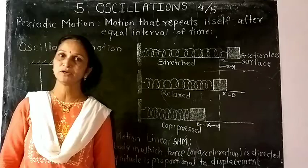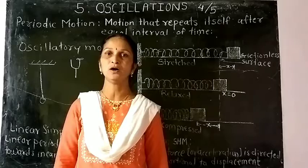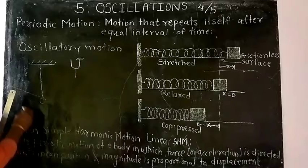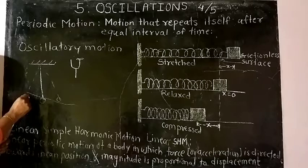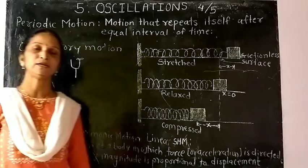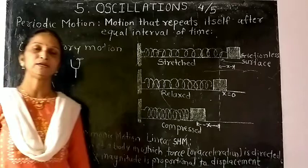The body performing oscillatory or vibratory motion is known as an oscillator or vibrator. One complete set of movements — where the bob starts from one extreme position, moves towards the mean position, moves to the other extremity, returns to the mean position, and comes back — is known as one oscillation.